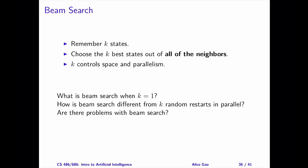Our first population-based algorithm is called beam search. Beam search remembers a population of k states, where k is greater than or equal to 1. At each step, we will look at all the neighbors of these k states, and we will choose the best k states among all the neighbors to be the population at the next time step.